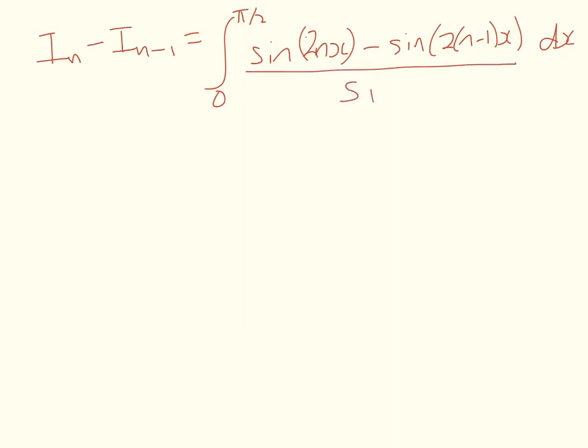Okay, so you should get something like this. I_n minus I_{n-1} is the definite integral between those limits of sine of 2nx minus sine of 2 times (n minus 1)x dx. And because they're both over sine x we've already got a common denominator, so it looks like that.